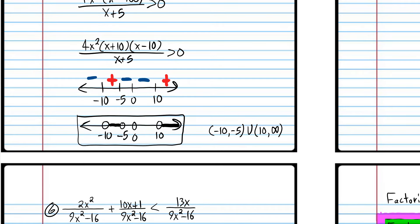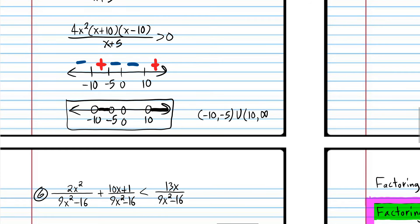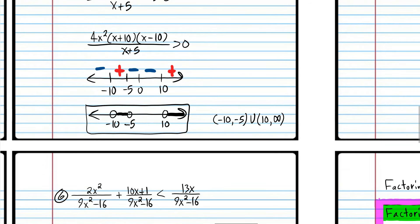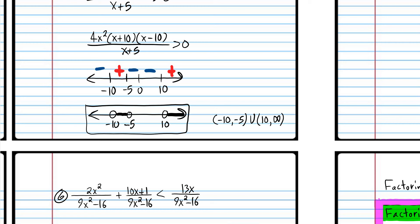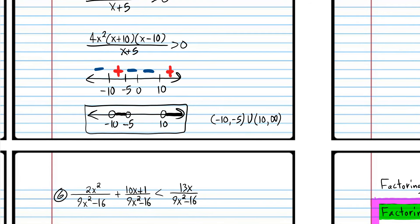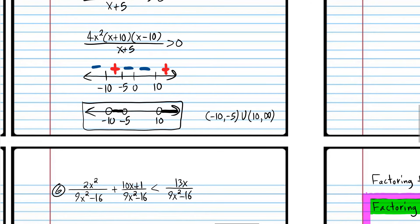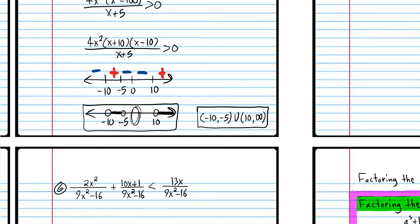In interval notation, it looks like we don't even need to include that zero separately. The zero is not really part of the solution in a way that requires separate notation — we can just get rid of it. That's the solution in inequality notation. If you wrote the zero, that's okay — it's not wrong, you just don't really need it.